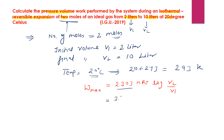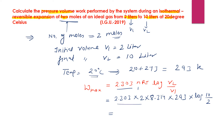Substituting the values: 2.303 × n = 2 × R = 8.314 (gas constant) × T = 293 × log(V2/V1) = log(10/2). The multiplication of 2.303 × 2 × 8.314 × 293 gives 11220.2, and we then compute log(5).